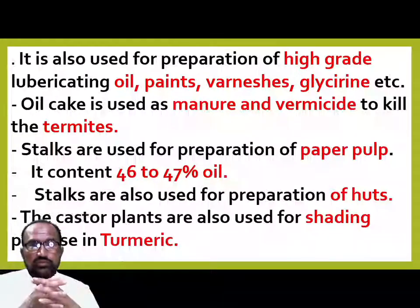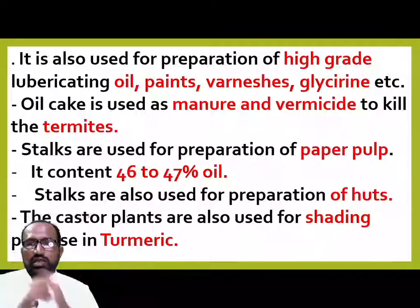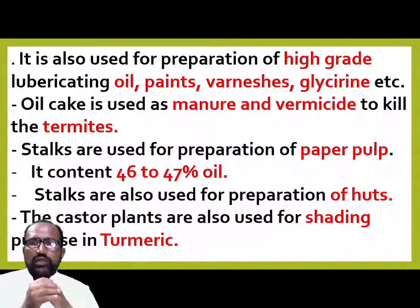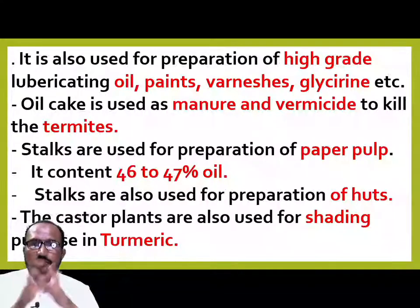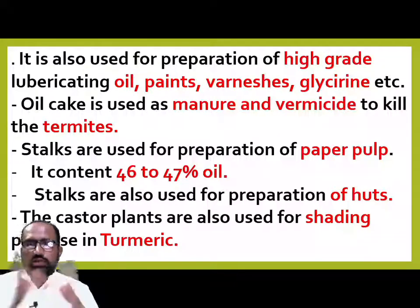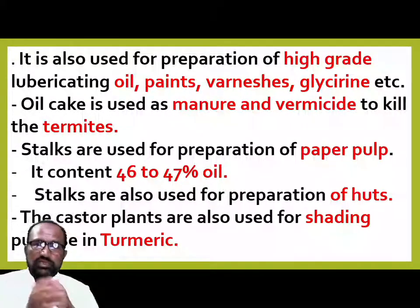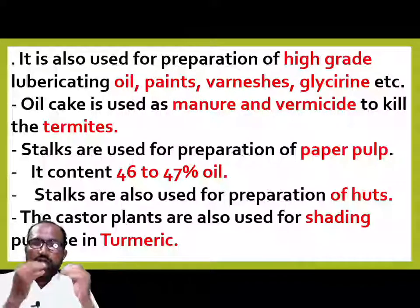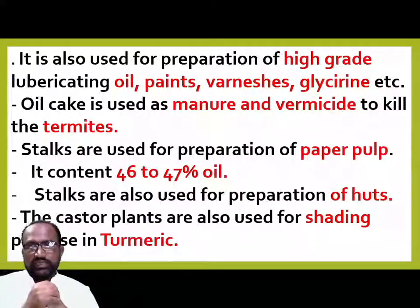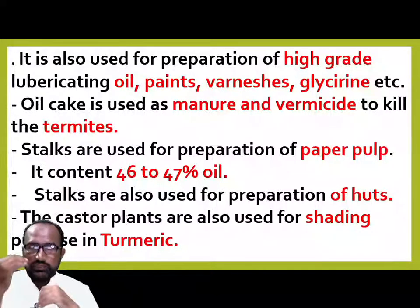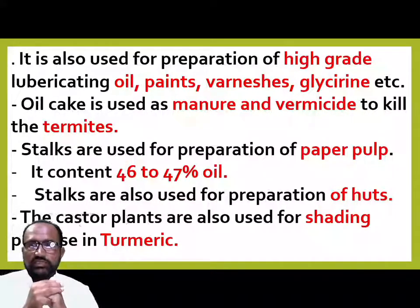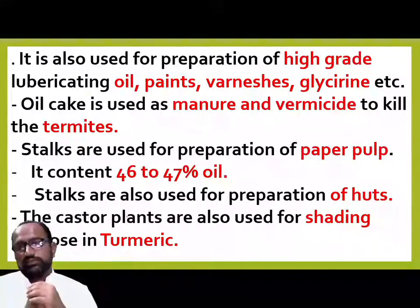The stocks (stalks) of castor are used for preparation of paper pulp. The stalks are hollow and light, so they are used in paper mills for paper pulp production, which is used in the paper industry. The oil content in castor seeds is about 46 to 47 percent.